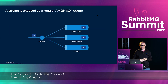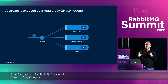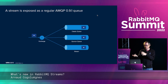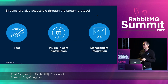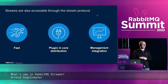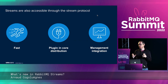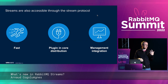A stream is still considered a regular AMQP resource, so it can be bound to an exchange alongside other queue types — classic or quorum queues — and then you have the stream. It's really just an addition you can benefit from immediately. There's also the new stream protocol we introduced, designed for speed and available as a plugin shipping in the core distribution, integrated with the management UI and REST API.